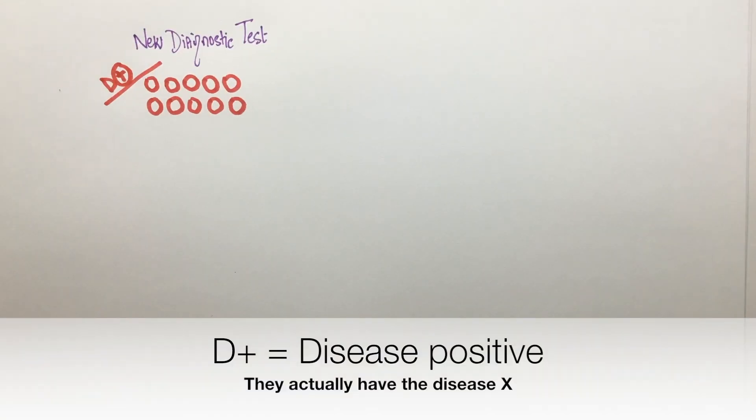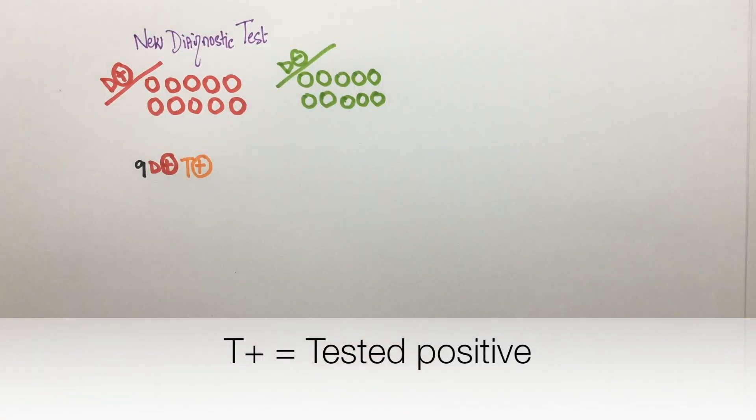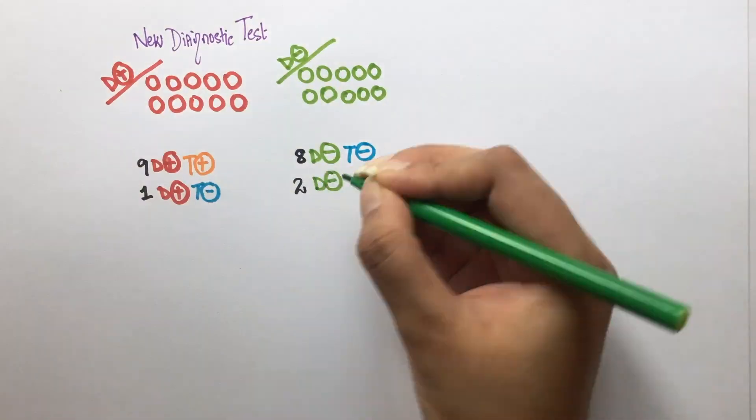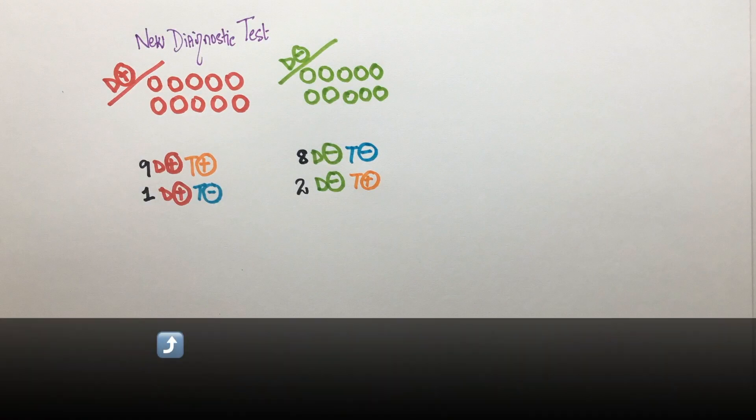In the first group, we have 10 people who actually have disease X and in this group there are 10 people who don't. After running our test, these are what the results look like. In this group of 10 people with disease X, nine tested positive and one tested negative.